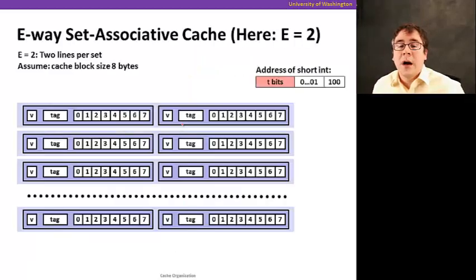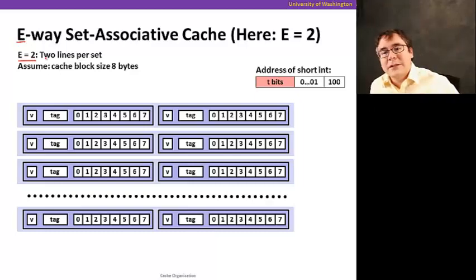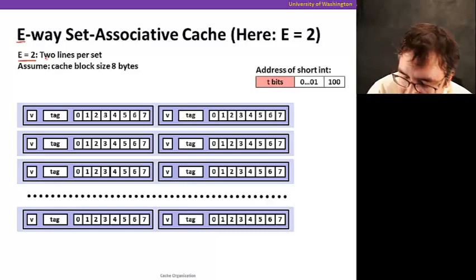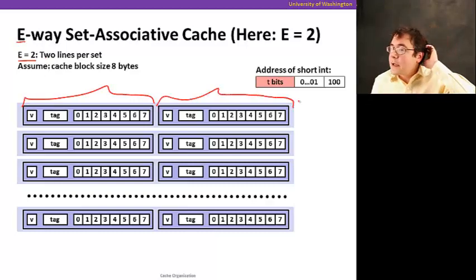Let's see how reads work on a set associative cache, in a generic e-way set associative cache. In our example here, let's make e equals 2. It means that it's a 2-way set associative cache. That means I have 2 lines per set.